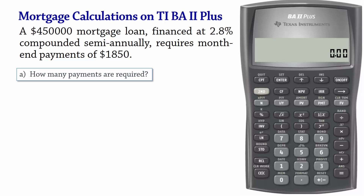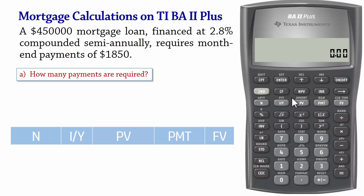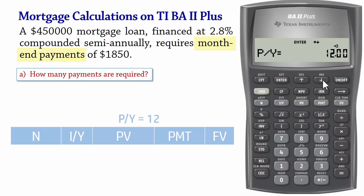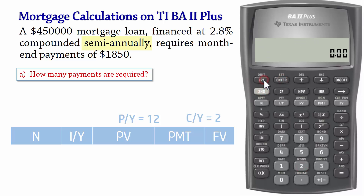To solve this, let's first set PY to 12 since payments are made monthly. And then we set CY to 2 for semiannual compounding. And press 2nd Quit.